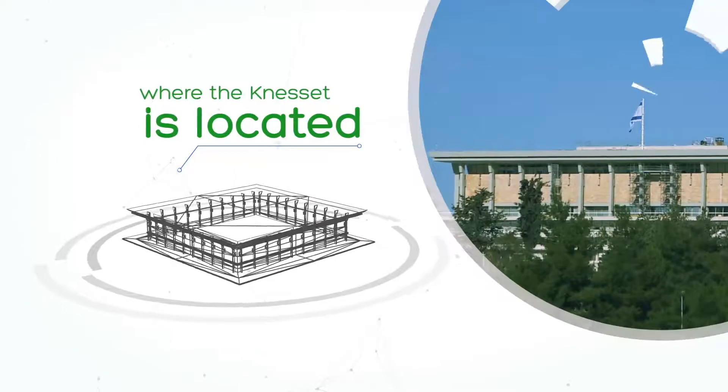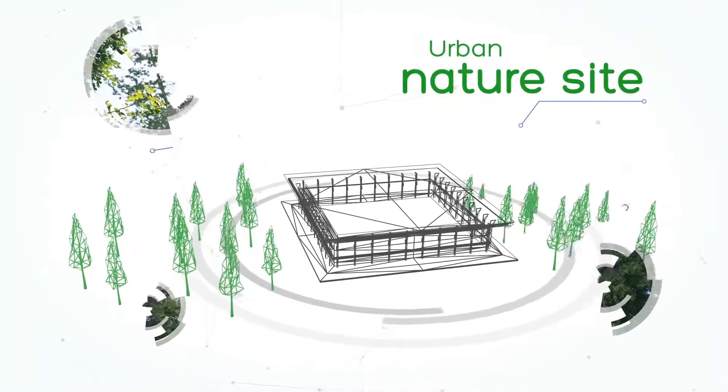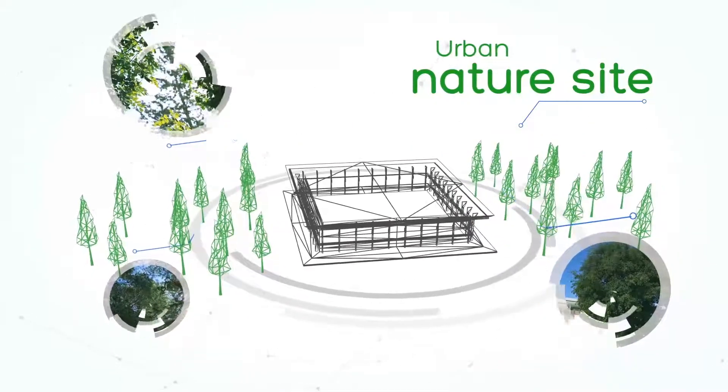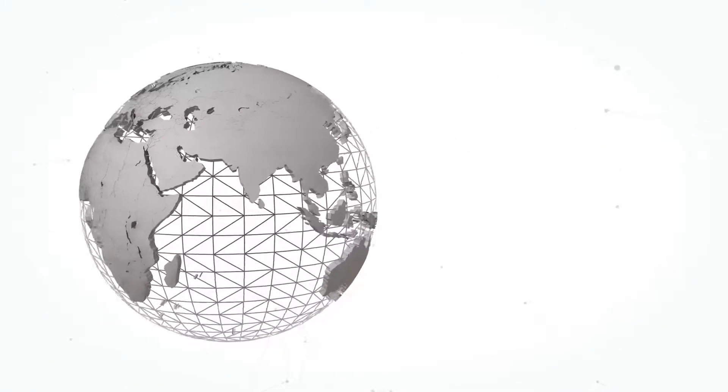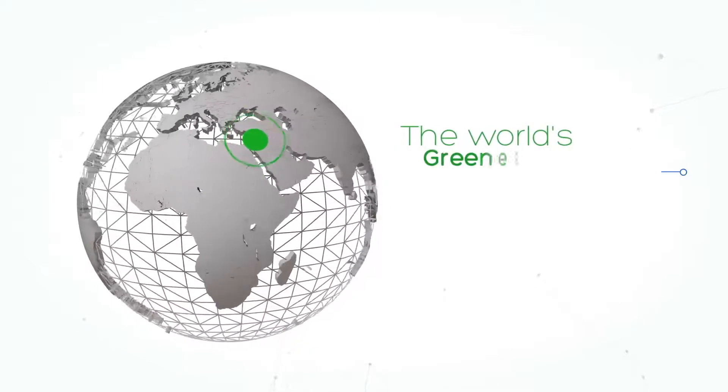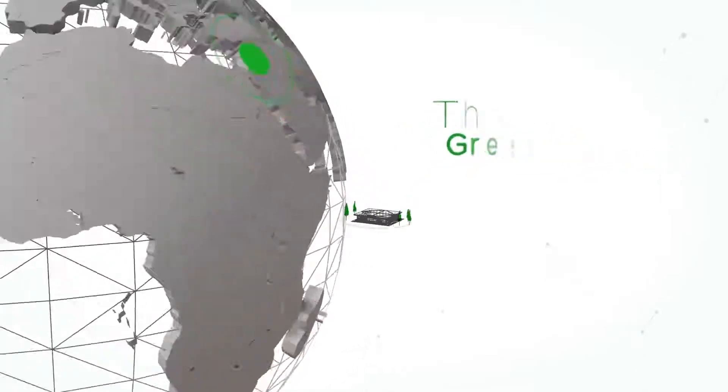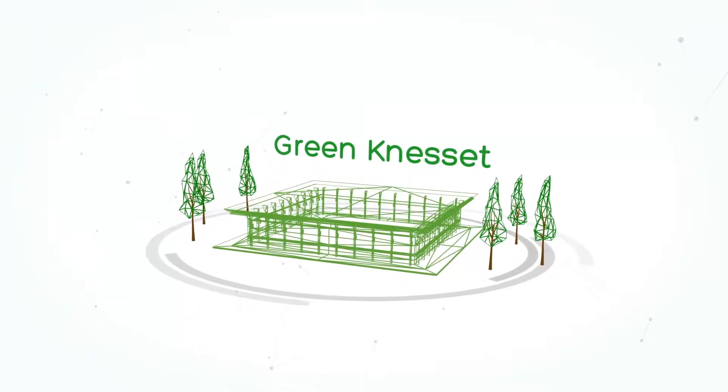In other words, the Givat Ram area where the Knesset is located is an urban nature site. And as of today, the Knesset is about to integrate with its surroundings more naturally than ever, turning into the world's greenest parliament, or in short, the Green Knesset.